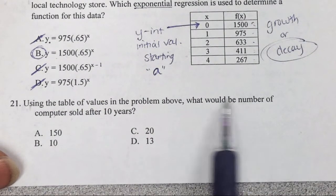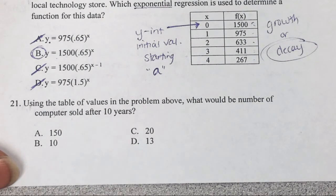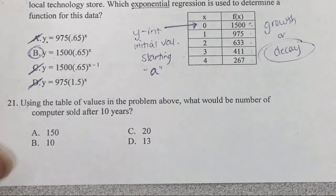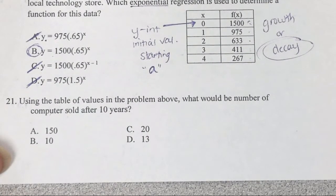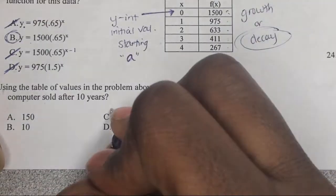Now you're definitely going to have to use this equation to figure out what would be the number of computers sold after 10 years. So use your calculator if you need to. Pause the video to do that. All right, the answer is C.